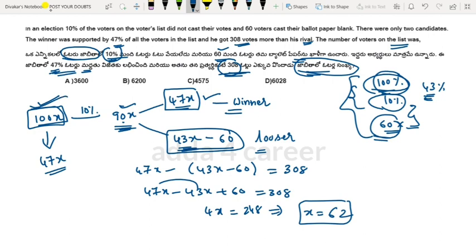So if you have 100x, that's 100 times 62, which equals 6200. The answer is B, 6200.